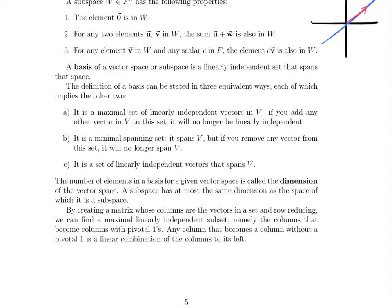Perhaps the most important definition of this unit: a basis of a vector space or subspace is a linearly independent set that spans that space. A basis is a linearly independent set, meaning none of the elements can be written as a linear combination of the other elements, and that set spans the space, meaning the linear combinations of those elements cover the entire space. It's a set of elements such that all their linear combinations create all of the elements in that space, and the elements are linearly independent from each other.